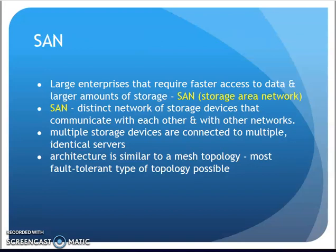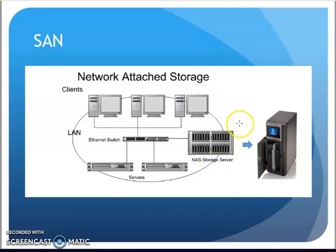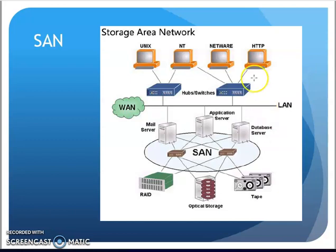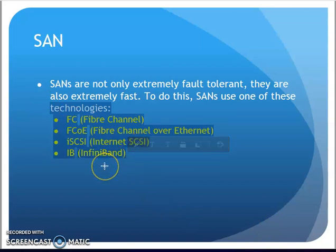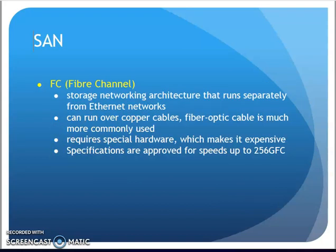They also mention storage area networks. A SAN is a network of storage devices designed for fast saving and retrieval of information. A network attached storage unit is a storage device on a given network — like a box with multiple hard drives. A storage area network is a separate dedicated network of storage devices that your main network connects to. SANs are extremely fault tolerant and very fast. Technologies used include Fiber Channel, Fiber Channel over Ethernet, iSCSI, and InfiniBand.